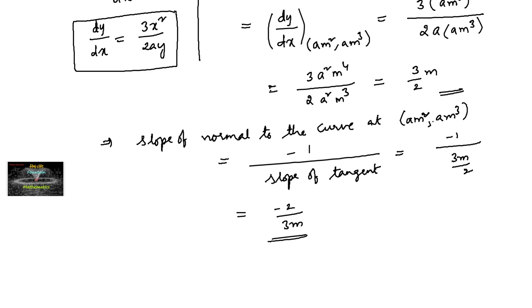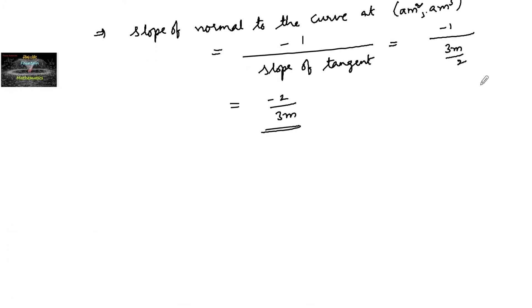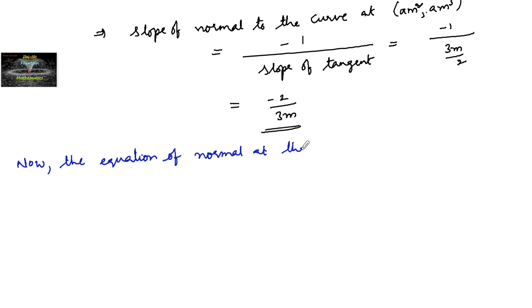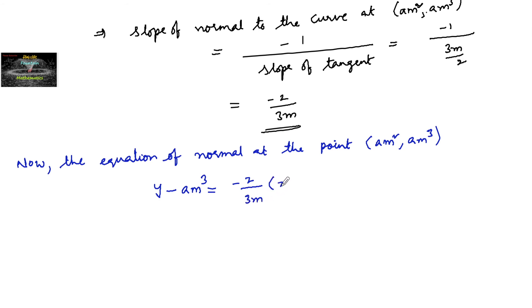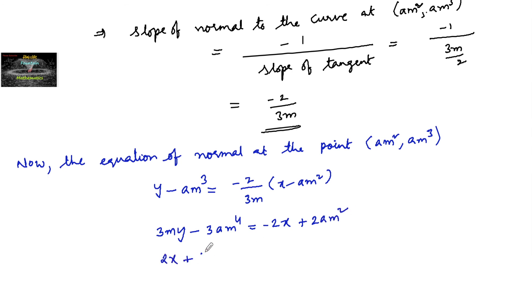Hence the equation of normal at the point (am², am³) with slope −2/(3m) can be written as y − am³ = −2/(3m) · (x − am²). Cross-multiplying: 3m(y − am³) · 3m = −2(x − am²), giving 2x + 3my − 3am⁴ − 2am² = 0.